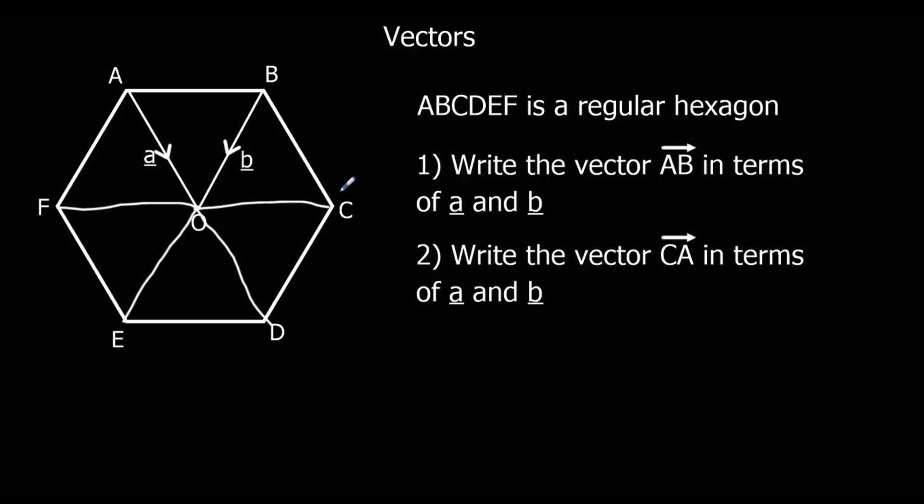And because they're all equilateral triangles, all these vectors are the same. So A to O is going to be the same as B to C, and the same as F to E, and the same as O to D.